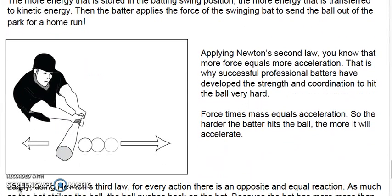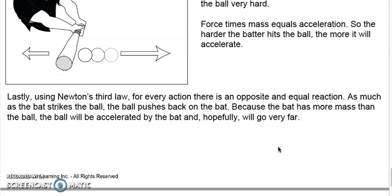Applying Newton's second law, more force equals more acceleration. This is why successful professional batters develop the strength and coordination to hit the ball very hard. Force times mass equals acceleration, so the harder the bat hits the ball, the more it will accelerate. Using Newton's third law, for every action there is an equal and opposite reaction. As much as the bat strikes the ball, the ball pushes back on the bat. Because the bat has more mass than the ball, the ball will be accelerated by the bat and will go very far.